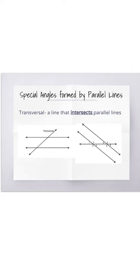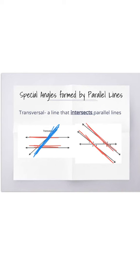The transversal line is the line that intersects parallel lines. It's the line that goes through the two lines that are parallel or never meet. In red you have the parallel lines and in blue is the transversal. In the picture on the right, the parallel lines go on the diagonal and are in red, they never intersect. But the transversal is going horizontally and it intersects the parallel lines.